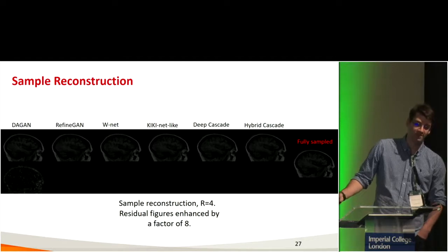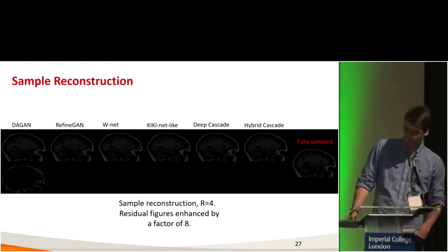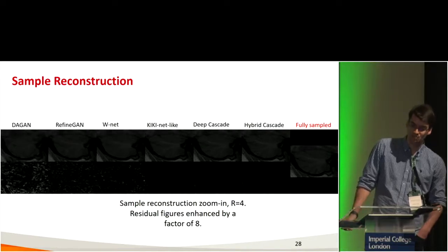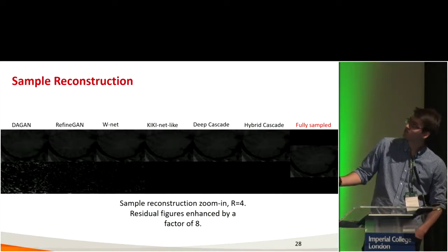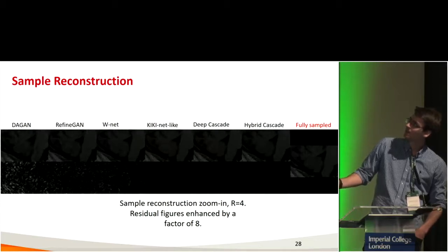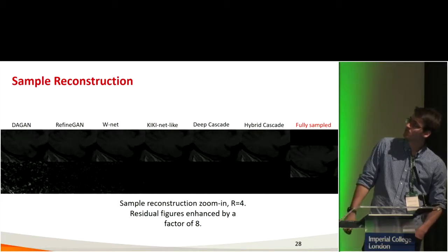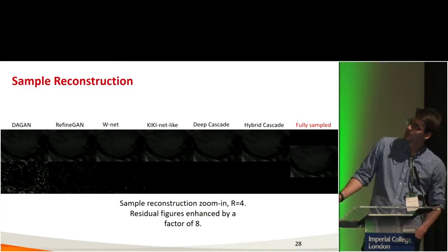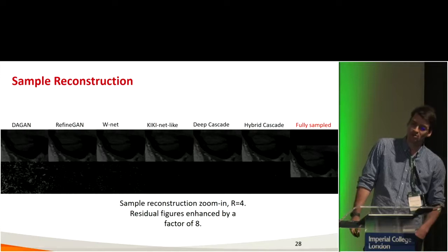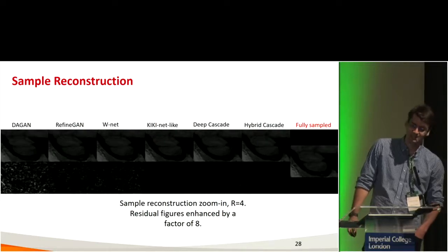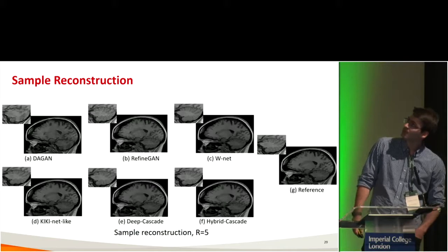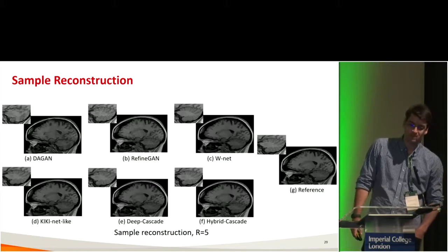Zooming into specific regions like the cerebellum, we can start to see differences. Hybrid cascade, DeepCascade, and KikiNet-like are very similar to the fully-sampled reconstruction. W-Net smooths the boundaries a little bit. RefineGAN and DAGAN also did a very good job. Here is a sample reconstruction for a speed-up factor of 5, showing reconstructions and a zoom-in on the cerebellum — again, hybrid cascade, DeepCascade, and KikiNet-like are very similar to the reference.